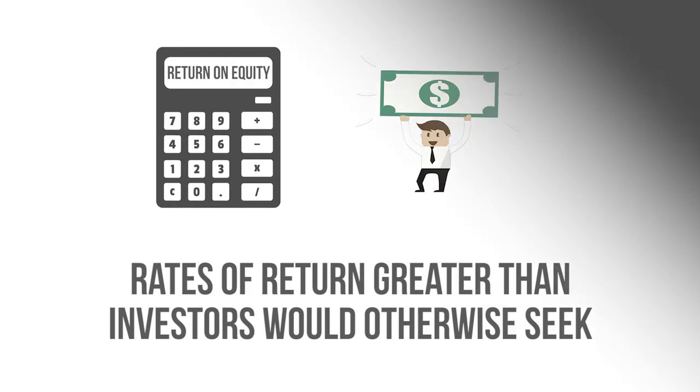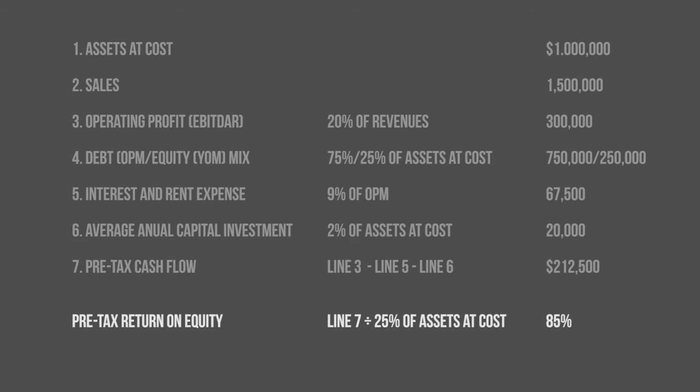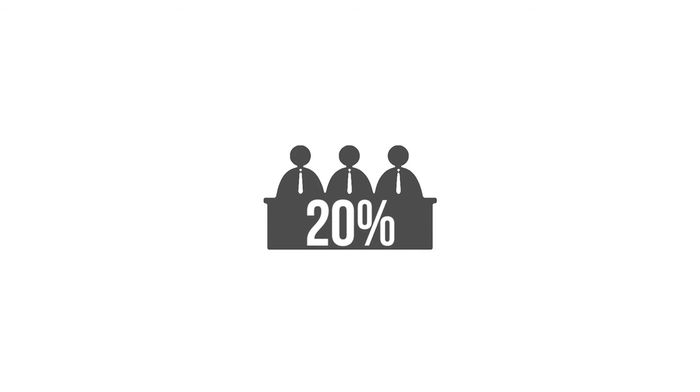Here was my initial example of how to compute the return on equity. In my illustration, the company has an 85% pre-tax rate of return, and that is awesome. As I noted, if another shareholder would be happy with a 20% pre-tax rate of return, then the value of the investment would be worth four and a quarter times more than it costs you.